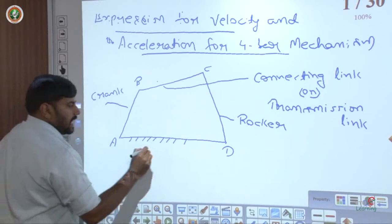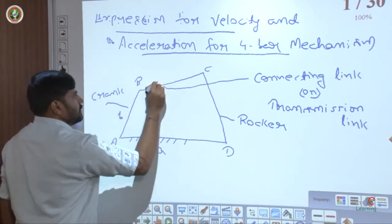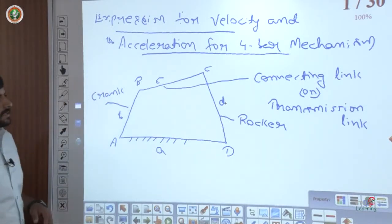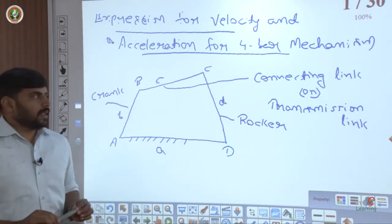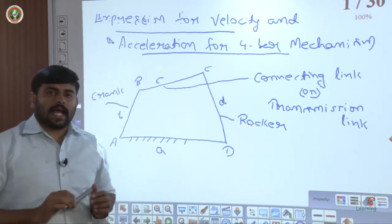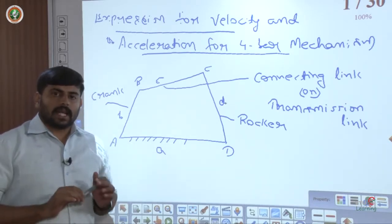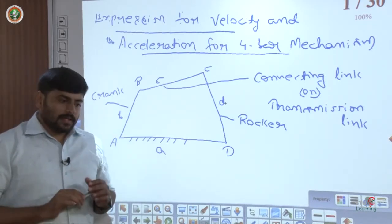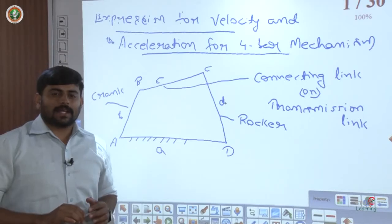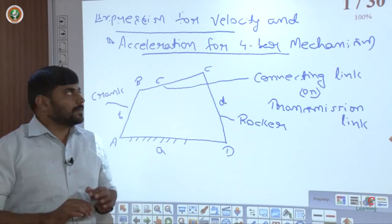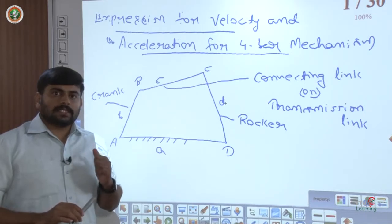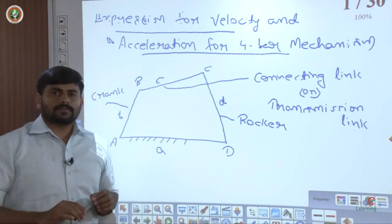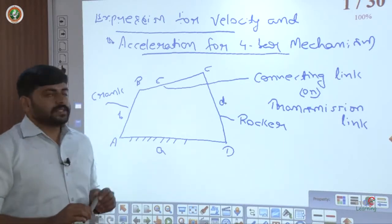Let us take the link lengths as a, b, c, and d. In the analytical method using complex algebra, we will employ Raven's method. You might ask why we use analytical technique when we already have the graphical method. The advantages of the analytical method are that we can obtain answers more accurately and we can use computers for computation. These are the two major advantages.